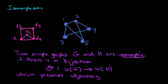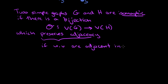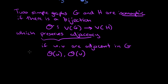Let's be a little more precise about what preserving adjacency means. Specifically, if U and V are adjacent in graph G — so U and V are vertices of G — after you map them to vertices in graph H, whatever U got mapped to and whatever V got mapped to, those two new vertices must be adjacent in H.